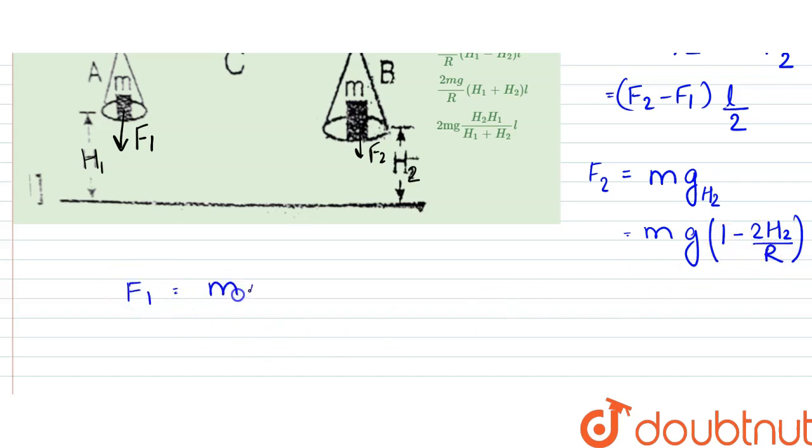Similarly, F1 would be equal to MG due to H1. That would be equal to MG into 1 minus 2 times H1 by R.